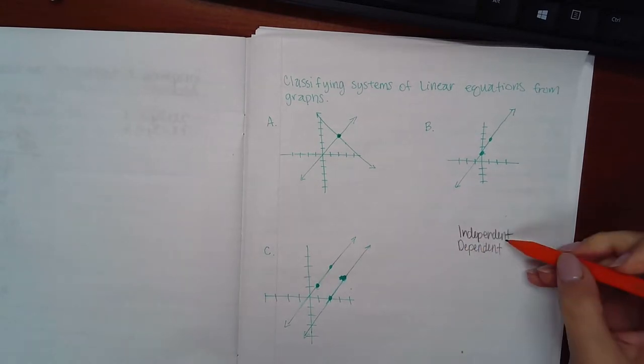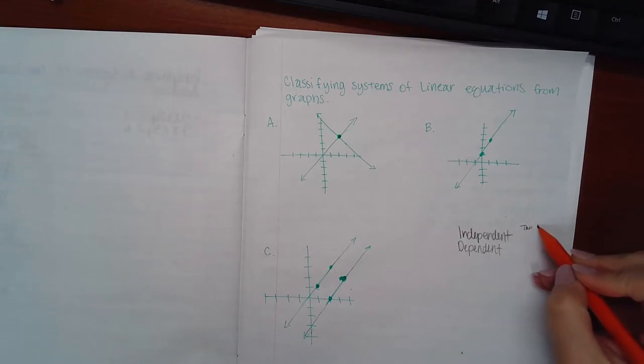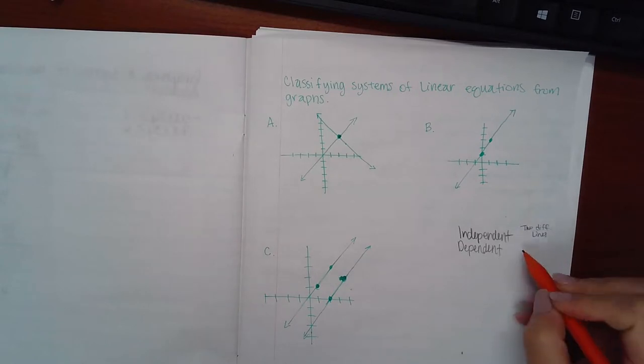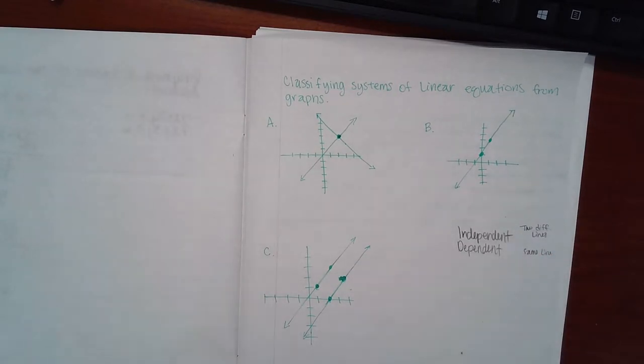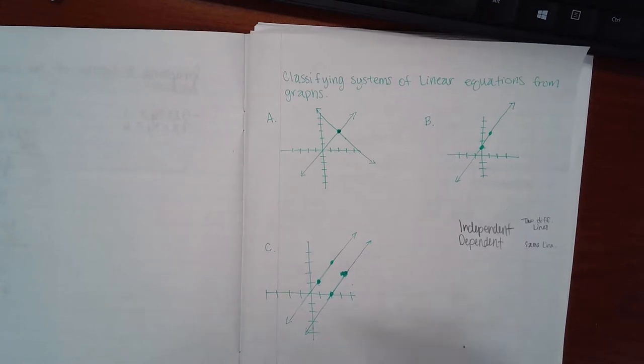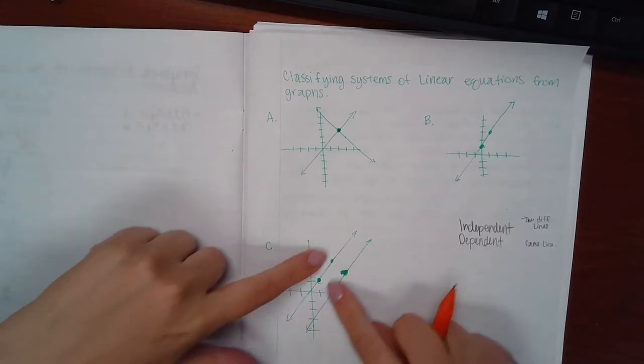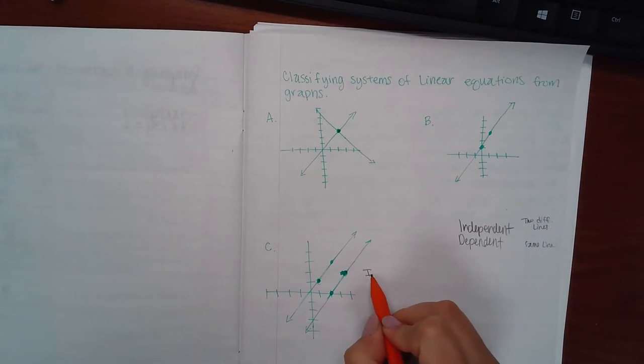Independent is when it's two different lines. Dependent is when it's the same line for both equations. So right away I can notice that these are two different lines, so this would be labeled independent.